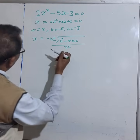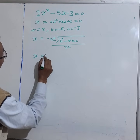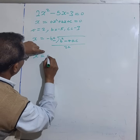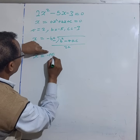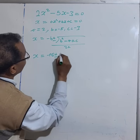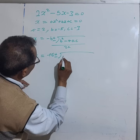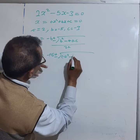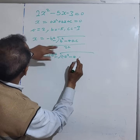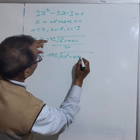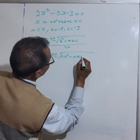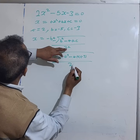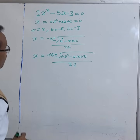So let's substitute: x equals negative b — b is negative 5, so negative times negative 5 — plus or minus, b squared is negative 5 squared, take away 4 times a, a is 2, times c which is negative 3, all over 2a, where 2a is 2 times 2.